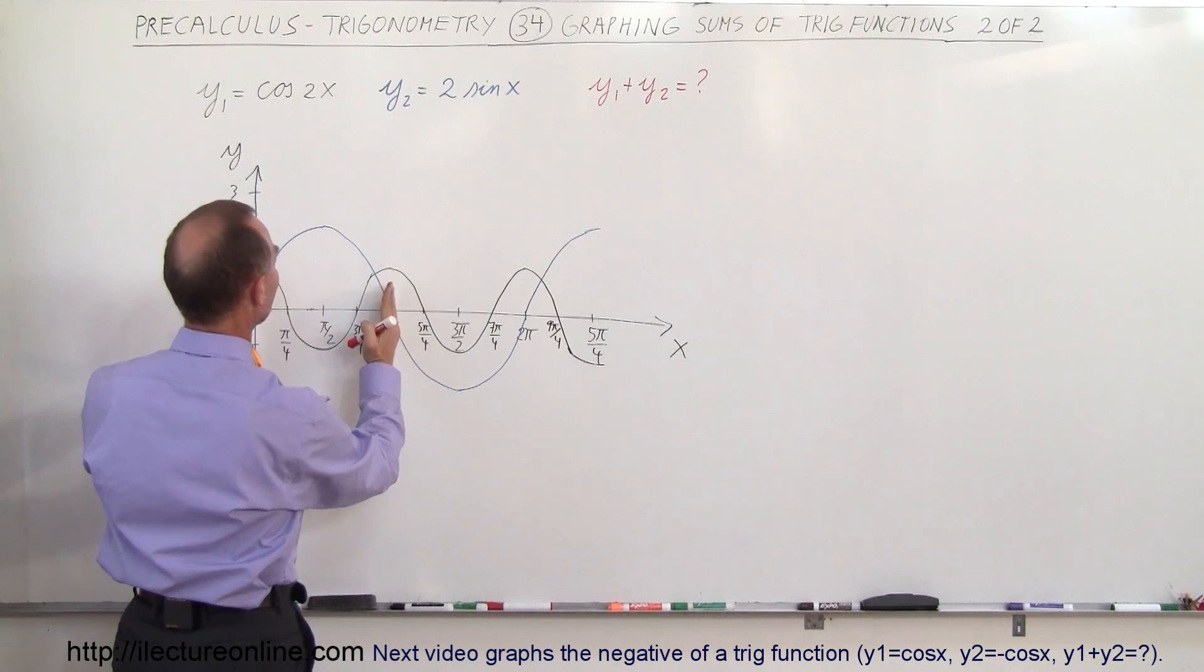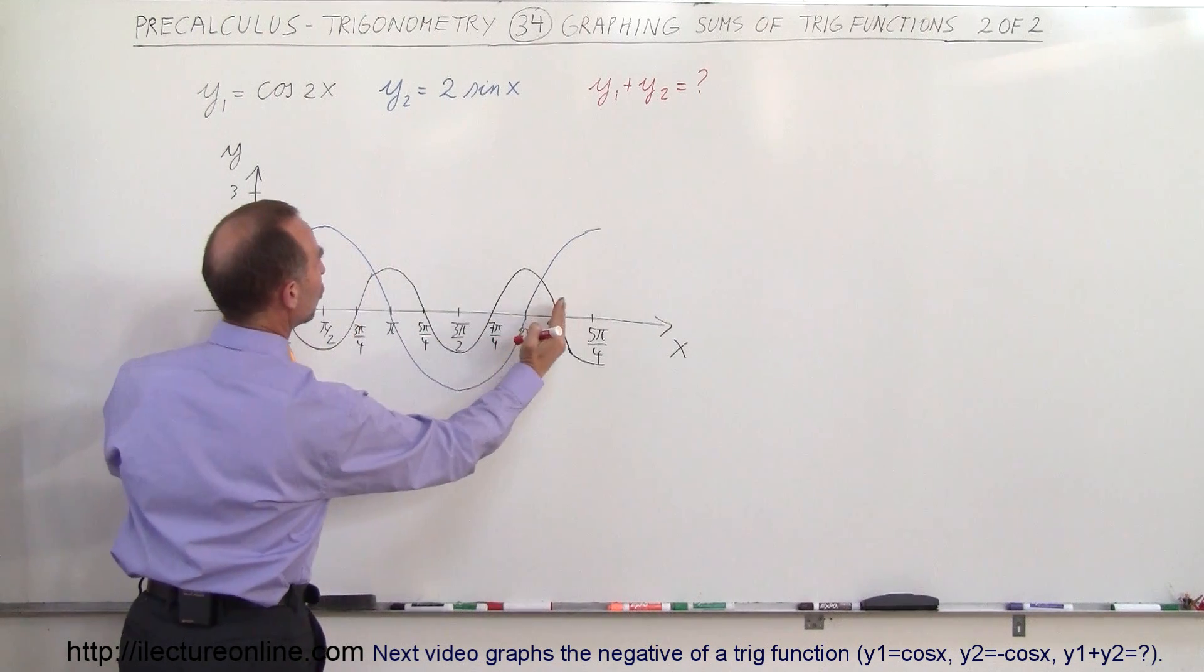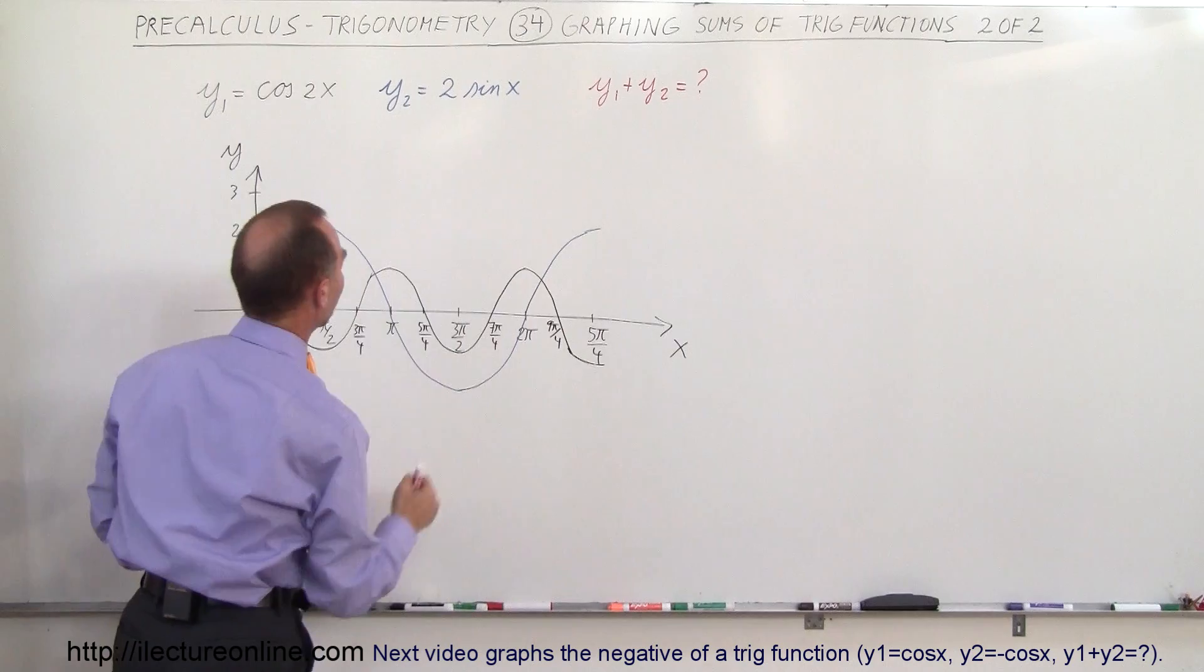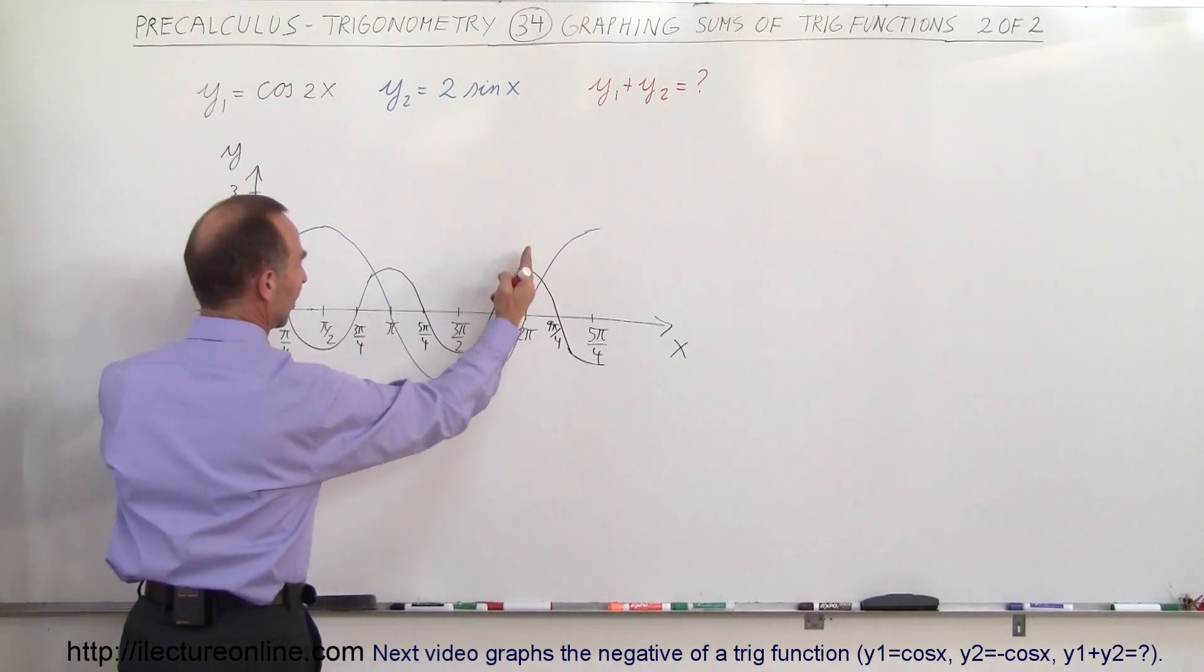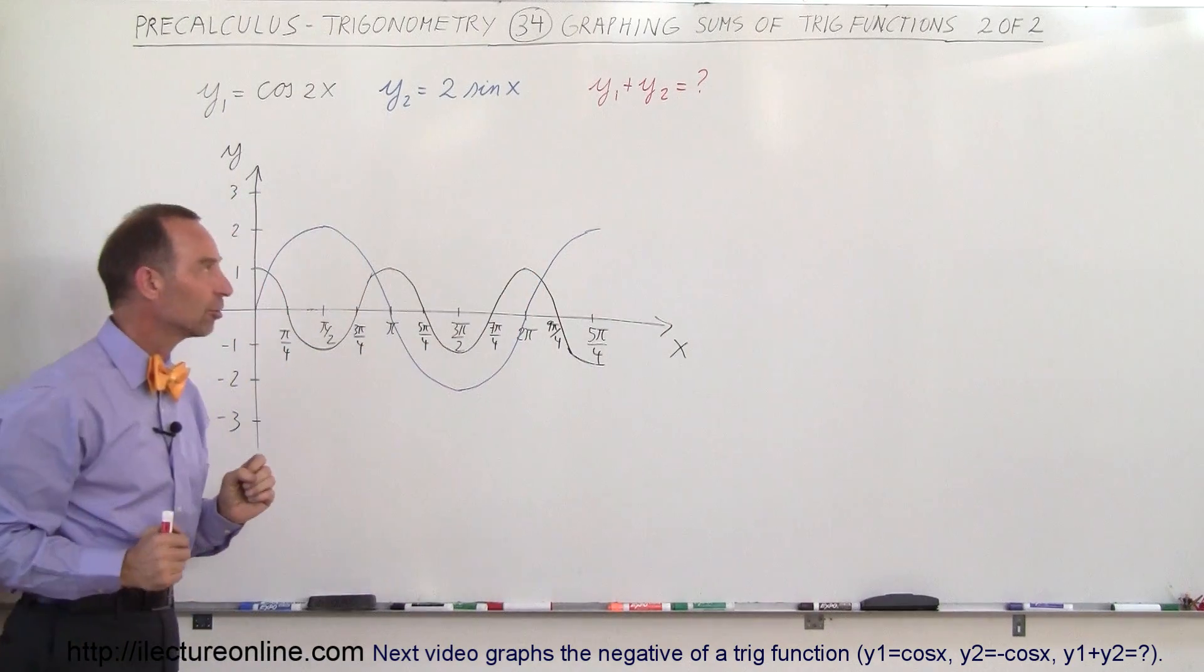So there will be one complete section of cosine wave per pi or two for a distance of 2 pi right there. So you can see there's two complete sections on the cosine function.